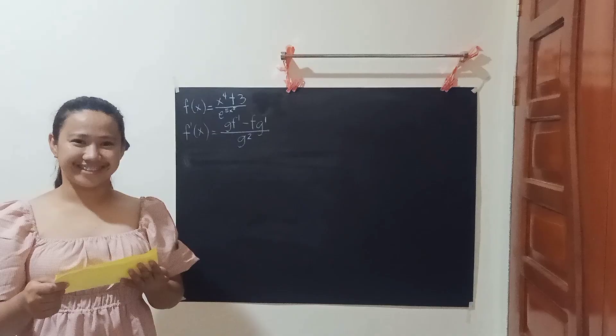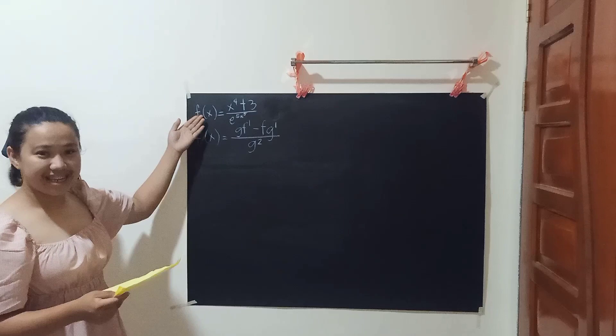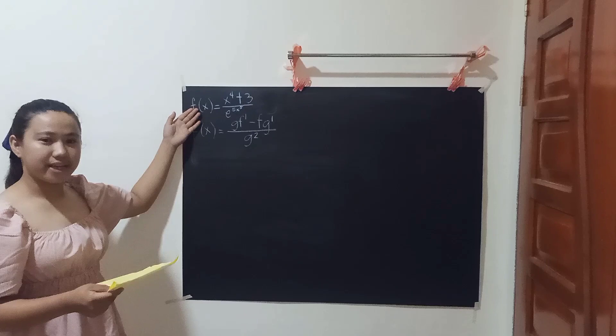Derivative of Exponential Function. How can we differentiate this function? As we can see, we have a fraction here. So we can use the quotient rule. This is the formula for solving a derivative of a quotient.